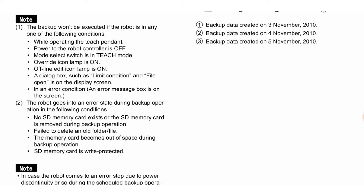The backup will also not execute if: the mode select switch is in teach mode, the override icon lamp is on, the offline edit icon lamp is on, a dialog box such as a limit condition or file open is displayed on screen, the screen is in an error condition, or an error message box is on screen. Second, the robot goes into an error state during backup operation in the following conditions: no SD memory card exists or the SD memory card is removed during backup operation, failed to delete an old folder or file, the memory card becomes out of space during backup operation, or the SD memory card is write-protected.